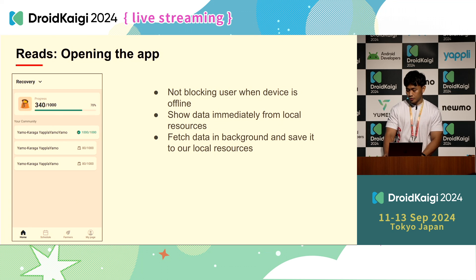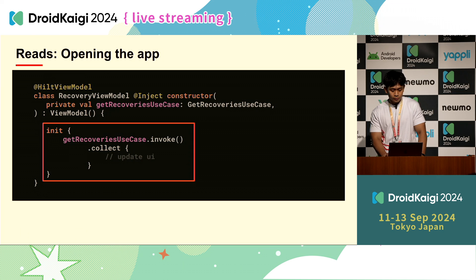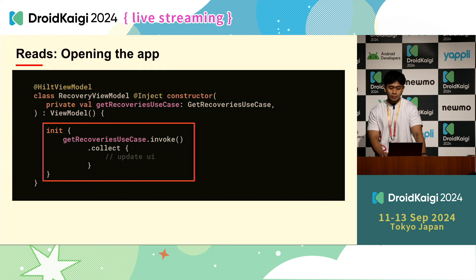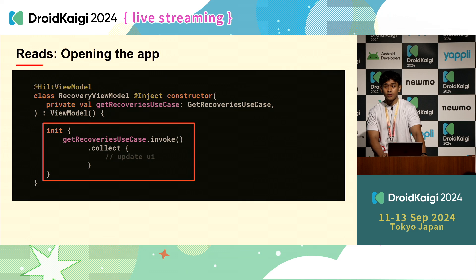Let's see the code. In our recovery ViewModel, we get recoveries from our use case and call it in init. We use collect because our first read is going to be from local resources, but at the same time we are fetching data from the server. By using collect, we are able to update the UI once there is an update from the API.